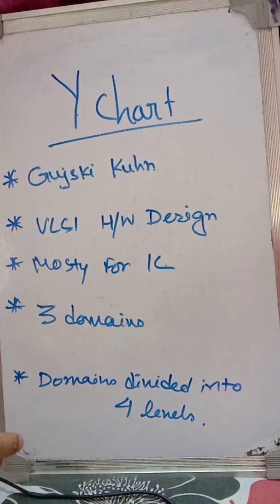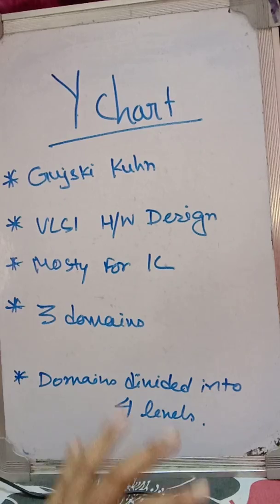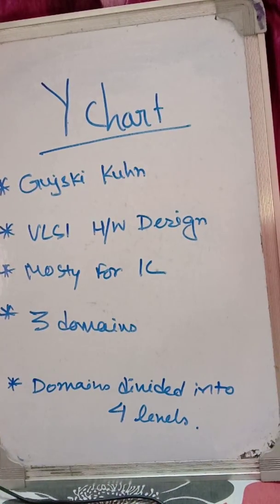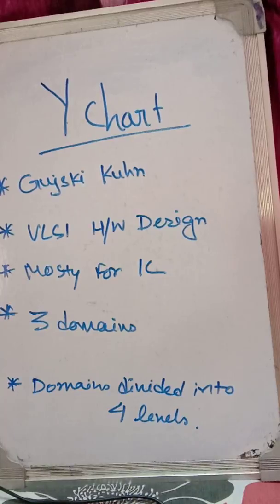The Y-chart consists of three domains, and each domain is divided into four levels. The three domains of the Y-chart are the behavioral domain, structural domain, and geometrical layout domain.